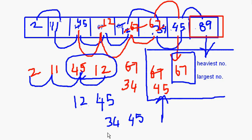You are basically going through the loop and the heaviest element is taken to the end of the array. First it was 89, then came 67, then came 45, and since there is one more 45, it will come next. Then 34, 12, 11 — like this it will go on. This is how bubble sorting works.